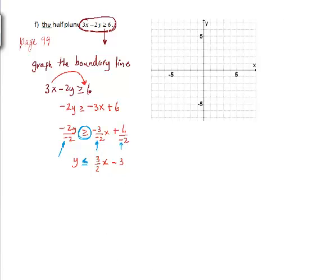Just like we did with a linear function, we know that the coefficient of the x term, when y is isolated, is the slope. So the slope here is 3 over 2. My y-intercept here is negative 3. This is describing your boundary line.